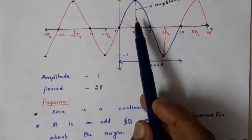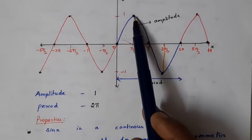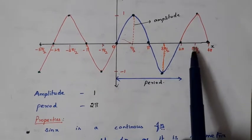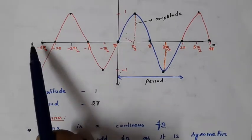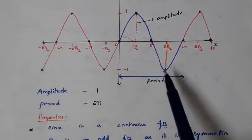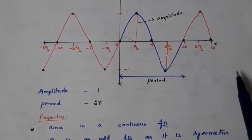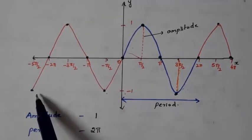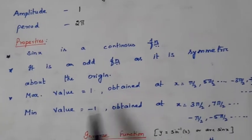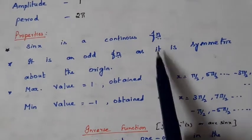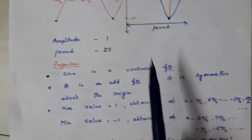The maximum value of sin x is +1 and the minimum value is −1. The maximum value +1 is obtained at π/2, 5π/2, 9π/2, and so on, and also at −3π/2, −7π/2, etc. The minimum value −1 is obtained at 3π/2, and similarly 7π/2. All these properties can be easily obtained just by looking at the graph.